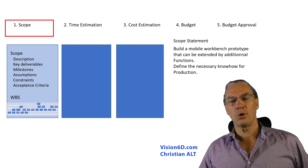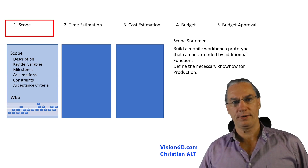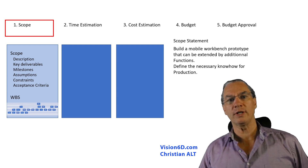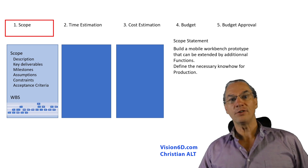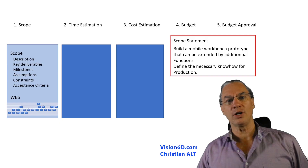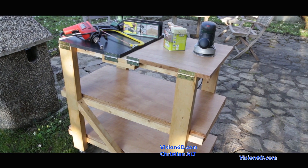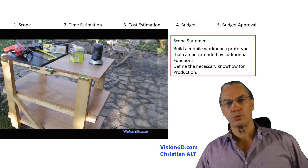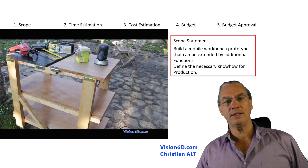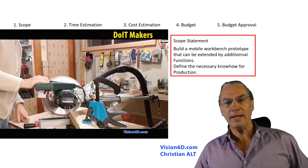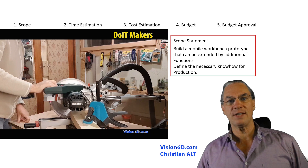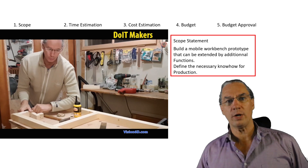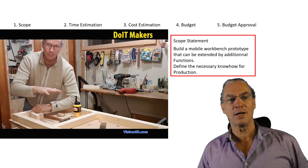The management of the project scope is the first part, in which we define what is in the project and what is not, and when to do the same. For this, we have the project scope statement. Here I have the example of a mobile workbench that we built — a mobile workbench prototype that can be extended by additional functions, and we also defined the necessary know-how to bring it into production. This was the scope statement for that project.